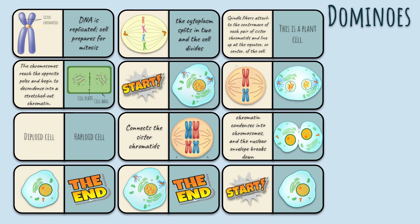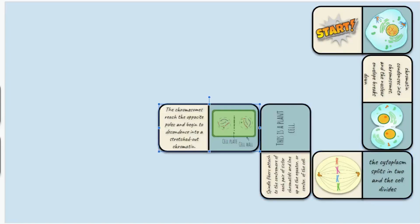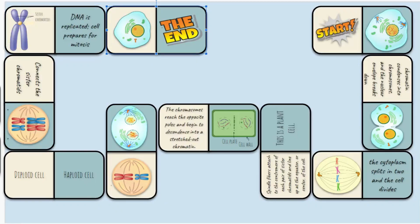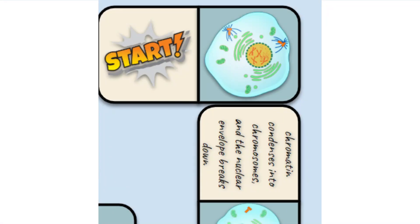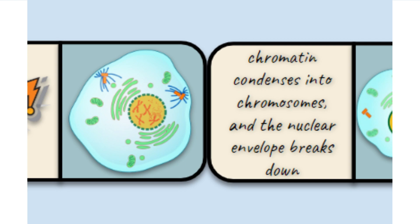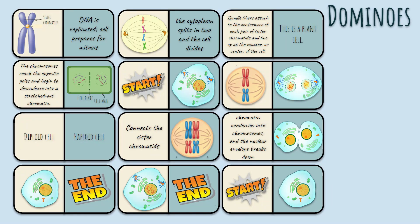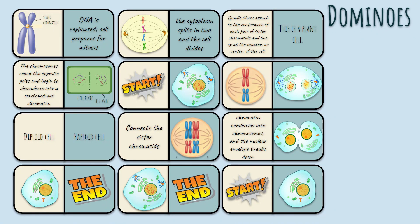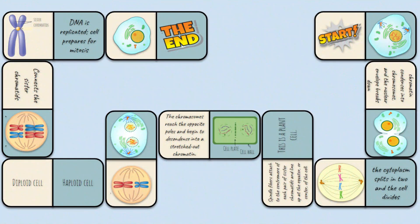What topic in your subject area do you think you can use dominoes for? I'm sure you have a lot of ideas. Back to the game rules: each player then lays domino cards end to end, making sure that joining ends are matching — meaning that in this example, the stage of mitosis matches with the description of the event. The last player to place a domino card with a correct match wins the game.